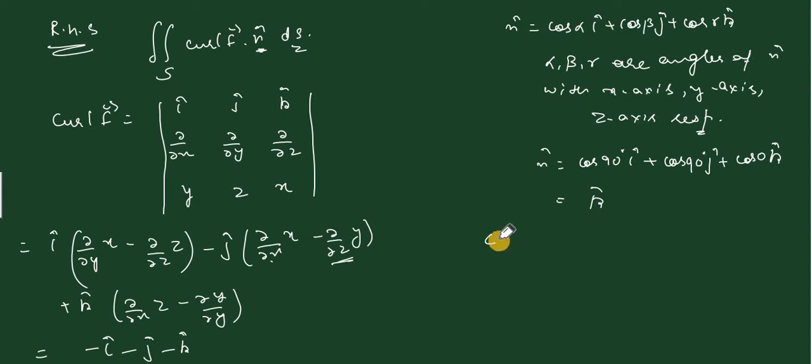Now for dS: n cap dS equals cos gamma dS. Gamma is 0 degrees here, so this becomes cos 0 dS equals dS, which means dS equals dx dy. Therefore, the integral becomes curl f dot n cap dS, which is minus i cap minus j cap minus k cap dot k cap dx dy over region R.